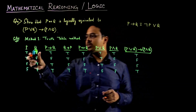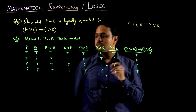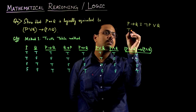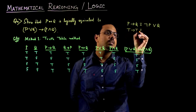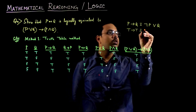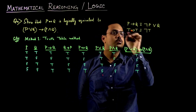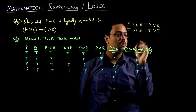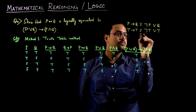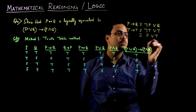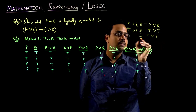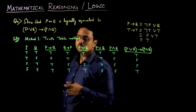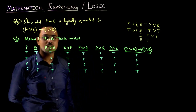Let us take the first case. We have P implies Q, that is true implies true. True implies true is equivalent to NOT true OR true, because P is true and Q is also true. This is therefore equivalent to false OR true, which is equivalent to true. So this result is valid.